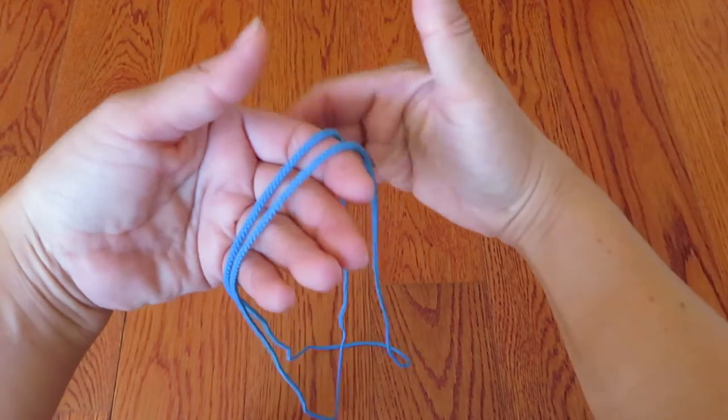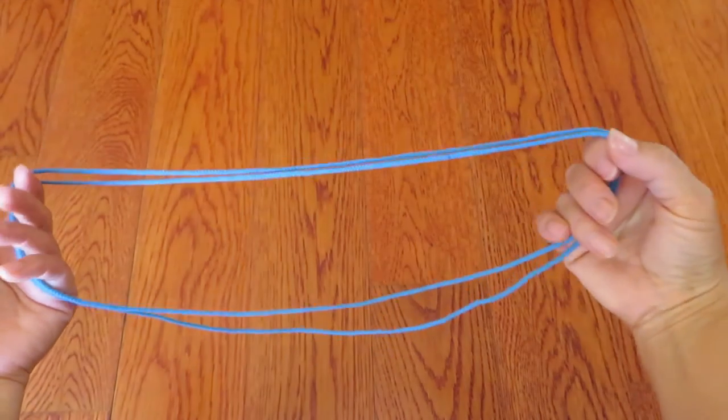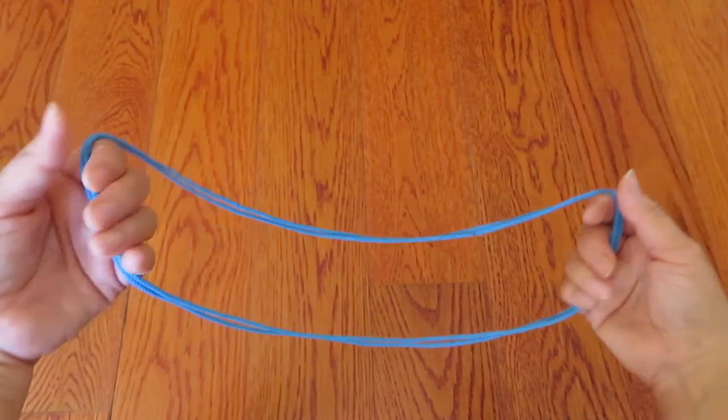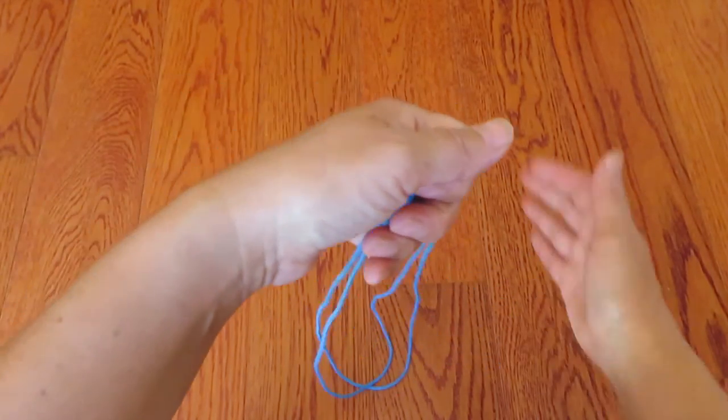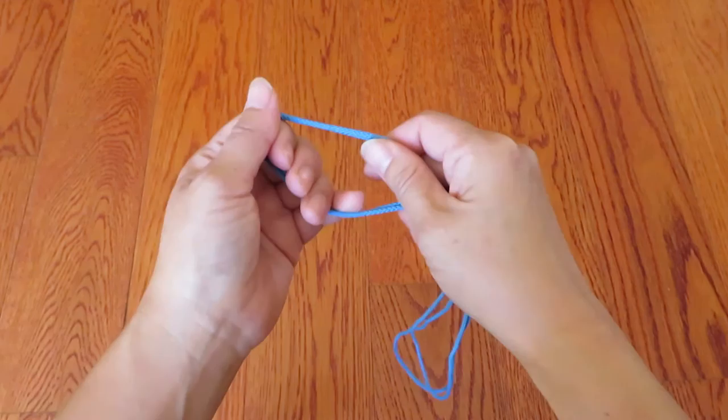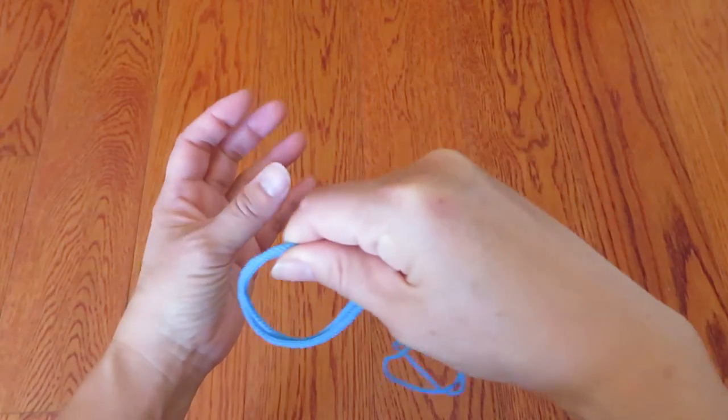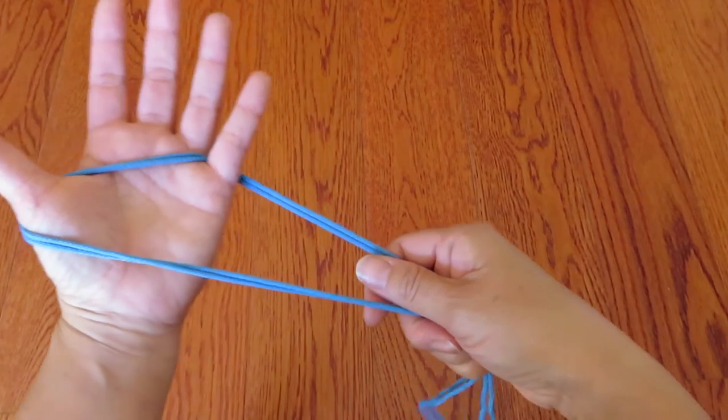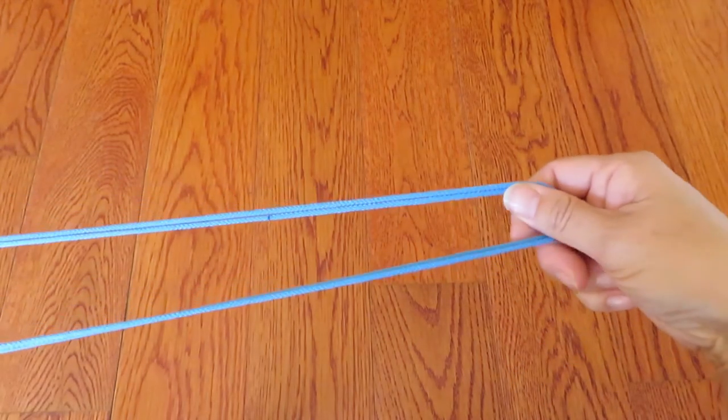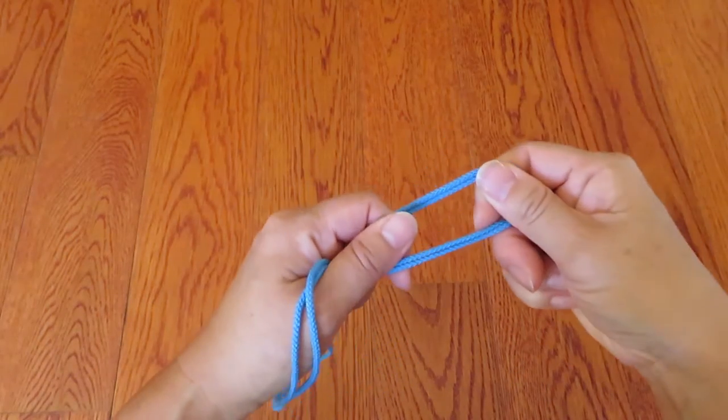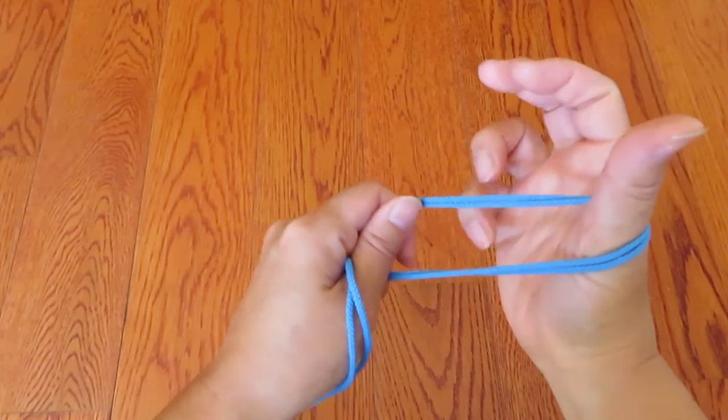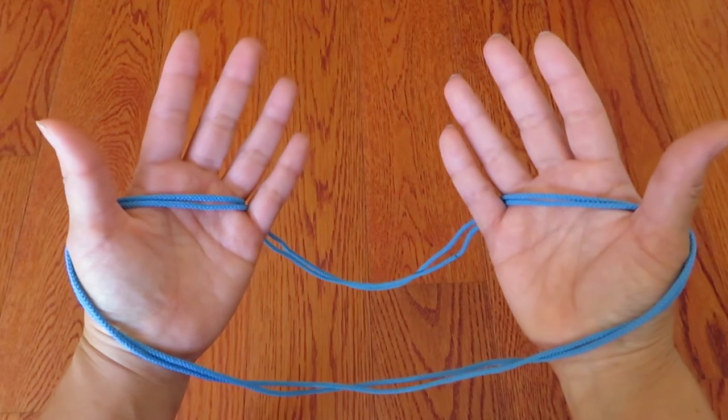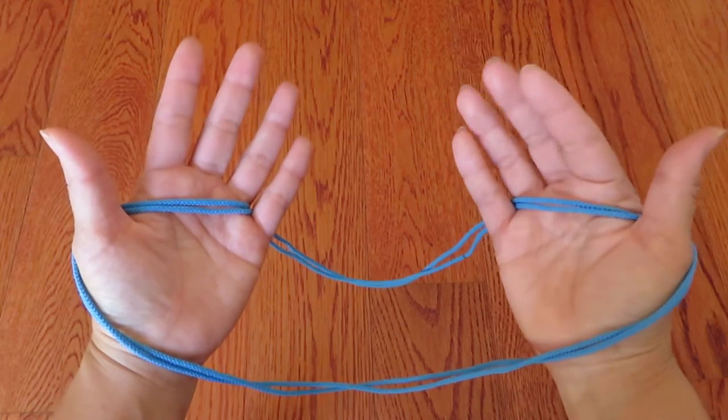And the other side of the loop just hold with the right hand, and it's a double loop now. Keep the double loop, one end of the double loop hook on thumb and the pinky, keep the double strings parallel. And the other end of the double loop hook on thumb and pinky like this.